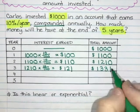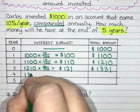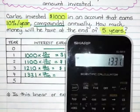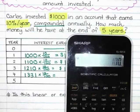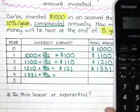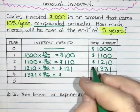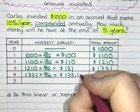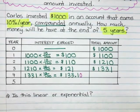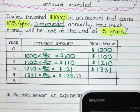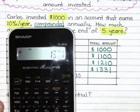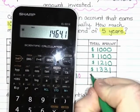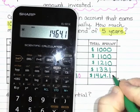Next, we take his current balance of $1,331 and find 10% of that: $1,331 times 10 divided by 100 gives $133.10. Remember to always use two decimal places. Adding $133.10 to $1,331 means he now has $1,464.10.